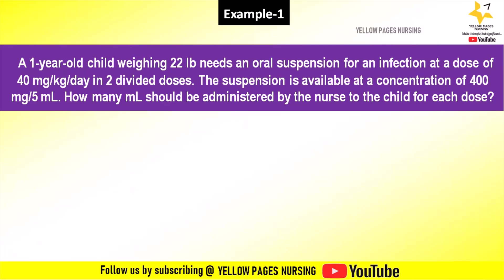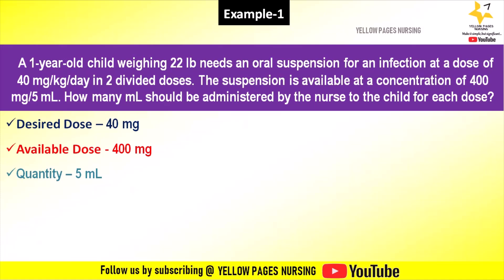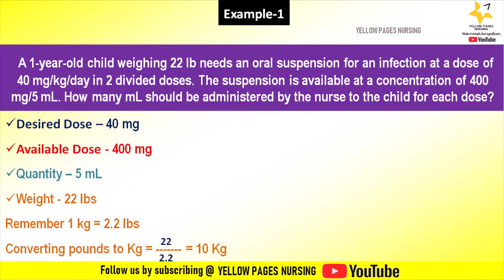To begin with, the desired dose is 40 mg, available dose is 400 mg, quantity is 5 ml, and weight is given in lbs — that is 22 lbs. Remember, 1 kilogram is equal to 2.2 lbs. So in order to convert lbs to kilogram, we divide 22 by 2.2, which gives the answer 10. So the weight will be 10 kilogram.